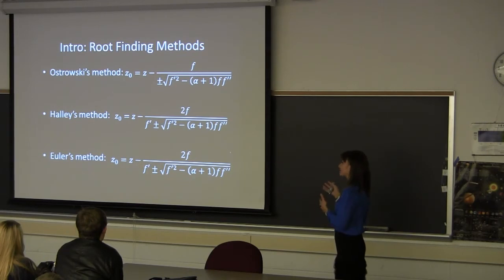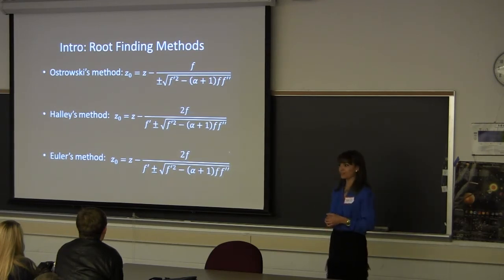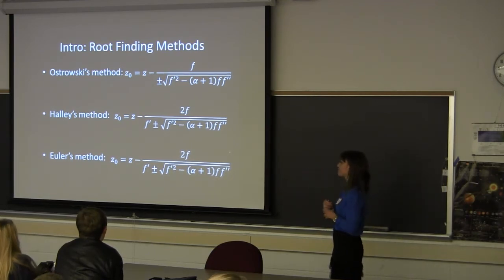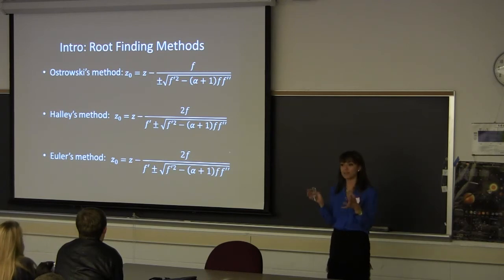So, for example, you have Ostrowski's method, Haley's method, Euler's method. I'm not going to derive those all for you. You can do that later tonight for some fun, maybe. However, as you can see, they all involve these alpha values, and so you can clump them into one big family.